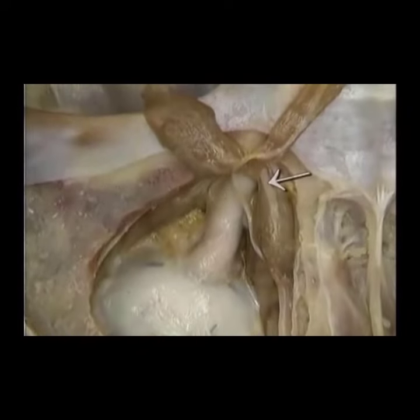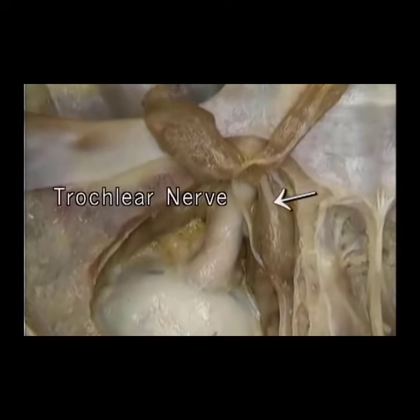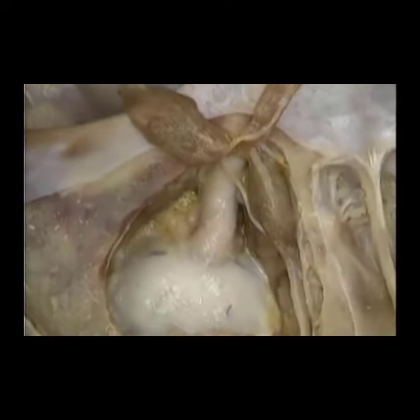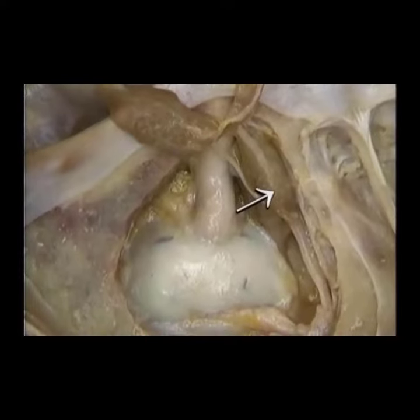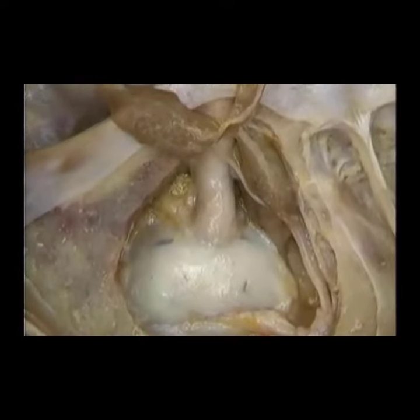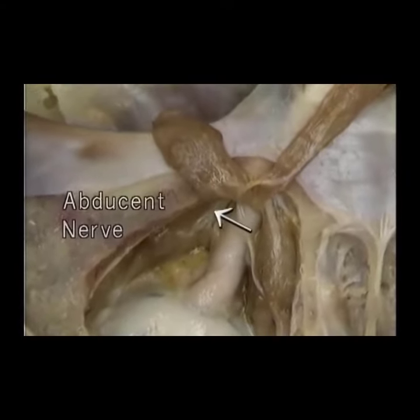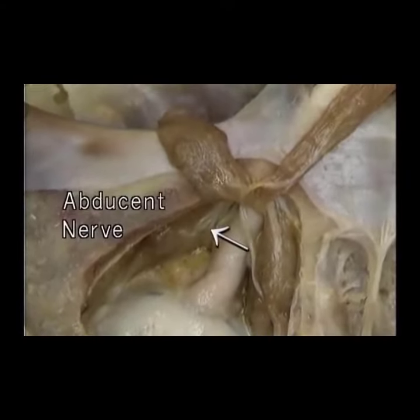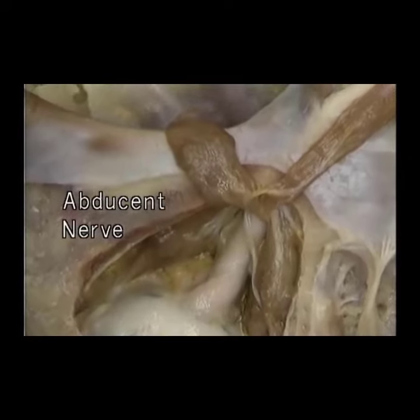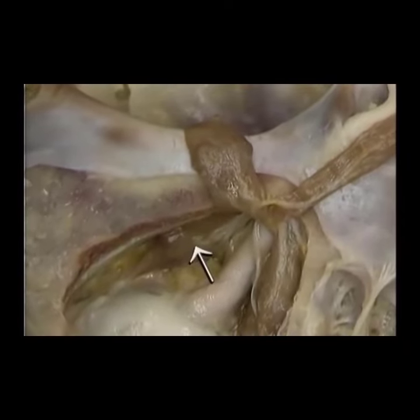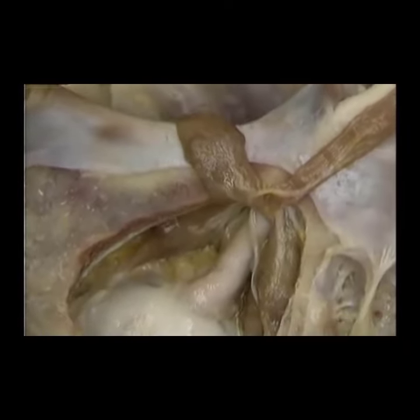Here's the trochlear nerve, the fourth cranial nerve. It supplies just the superior oblique muscle. Here's the abducent nerve, the sixth, supplying its one muscle, the lateral rectus, which abducts the eye.